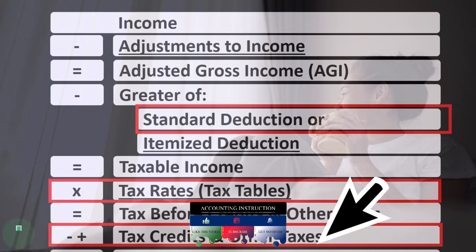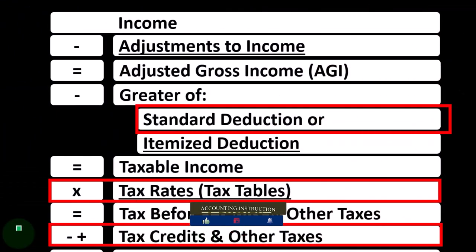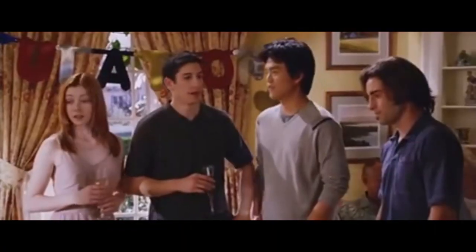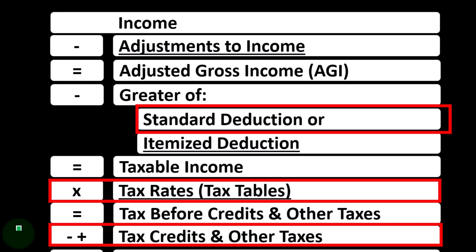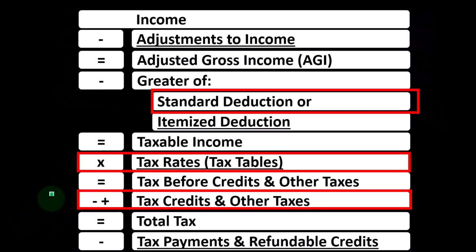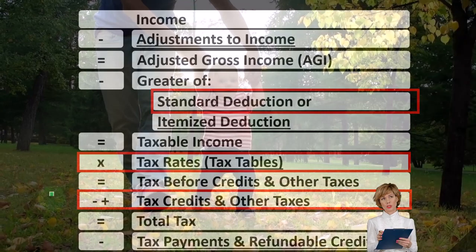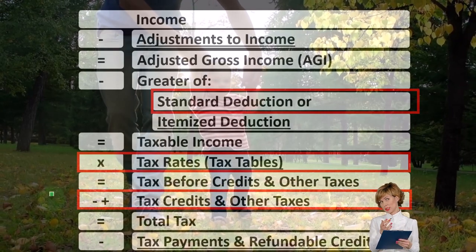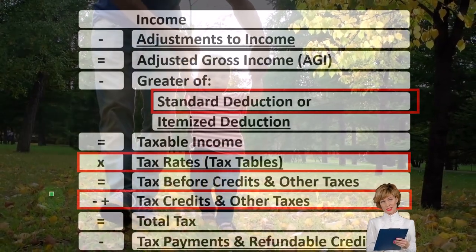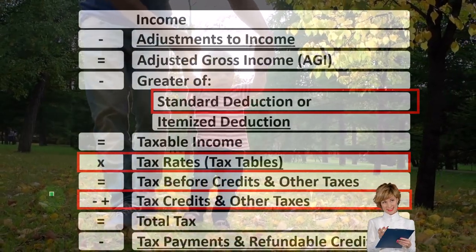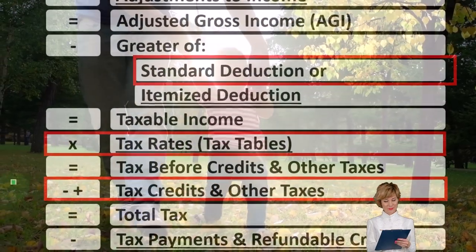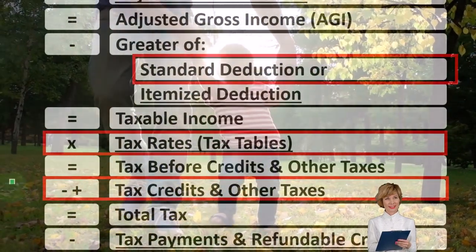We talked about the general rules in a prior presentation. The thought process is: if there is someone as a dependent, we want to think about do they qualify as a qualifying child? Do they qualify for the child tax credit? And if they don't qualify for the child tax credit, then we're looking to get that other dependent credit.